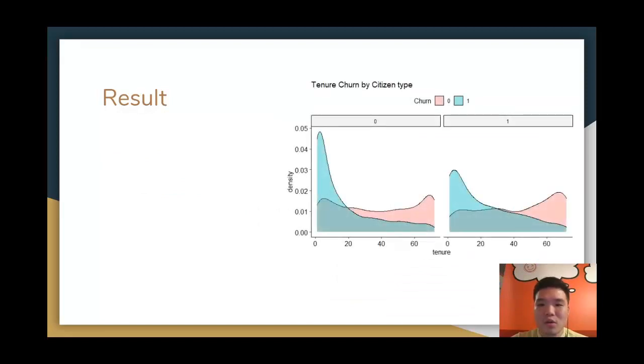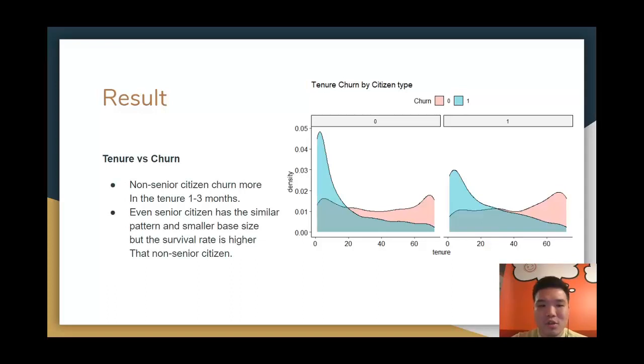Not limited to a contract, we are able to see from the tenure churned by citizen type too. The non-senior citizens churn more in the tenure, one to three months. Even the senior citizens has a similar pattern, as you can see from the right-hand side graph. But the survivor rate is higher than the non-senior citizens.